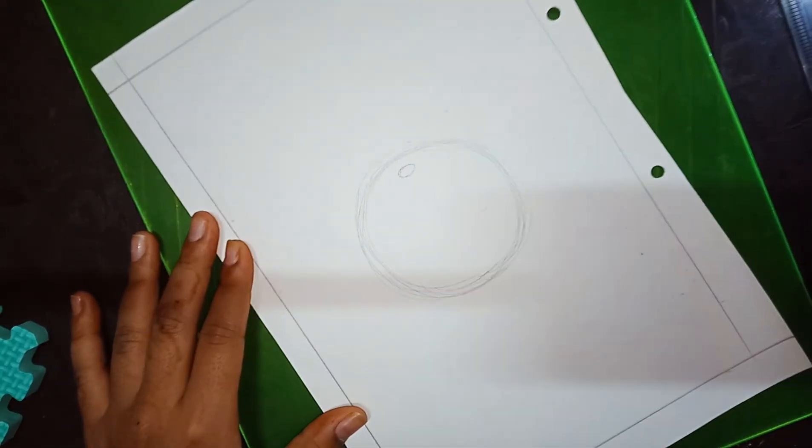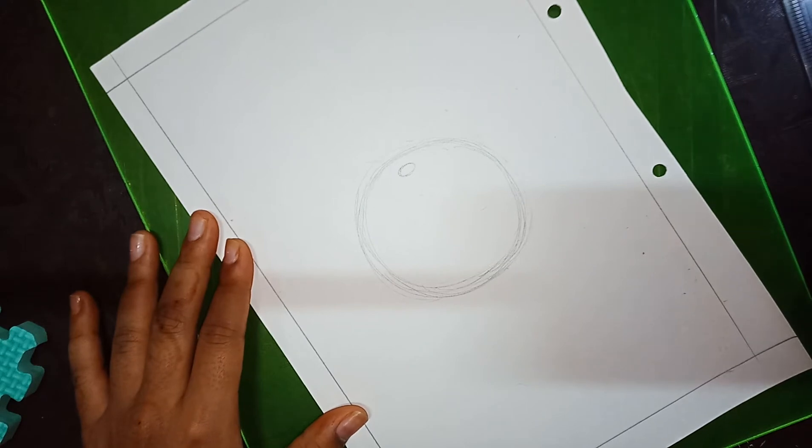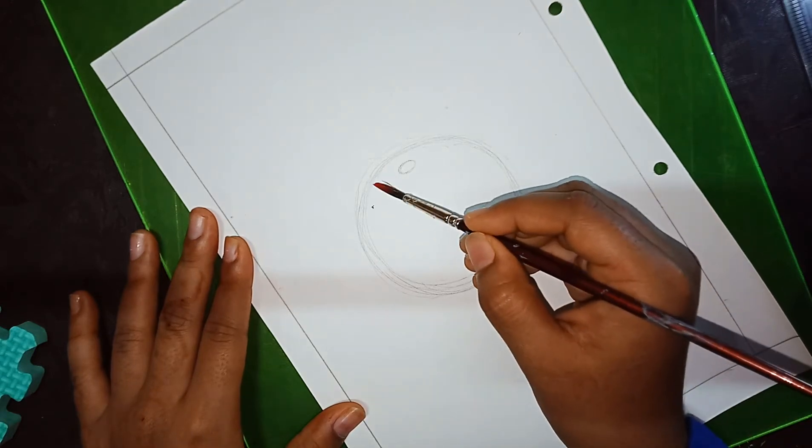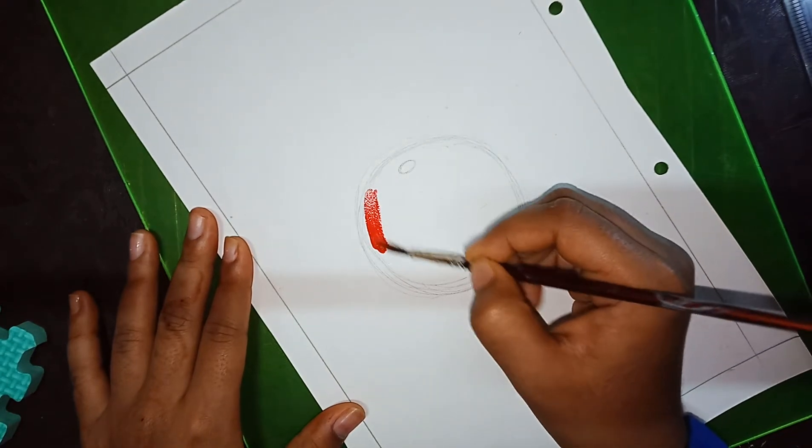Now we are going for the coloring part. So we are taking a brush. With that brush, we are first going to apply a red color which is not purely red but a mix of red and orange.